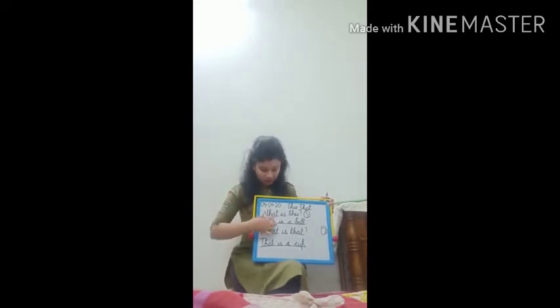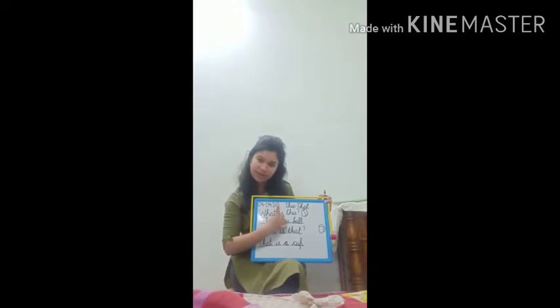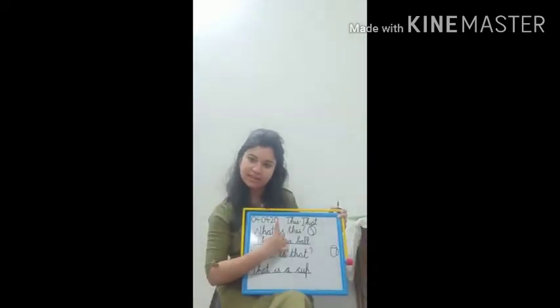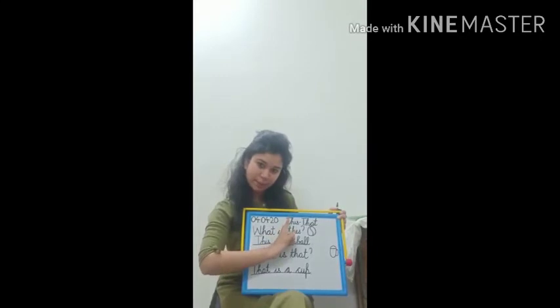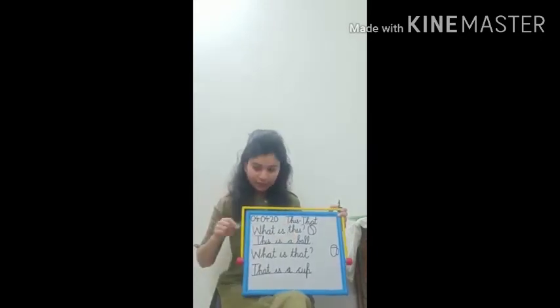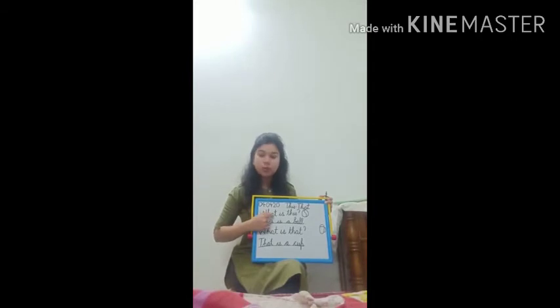Aur jab bhi one word complete ho jayega, toh aapko one finger ka distance rakhna hai — one finger gap. Then one word, then one finger gap, like this. Now read: W, H, E, T — 'What'?